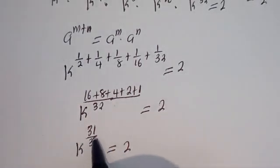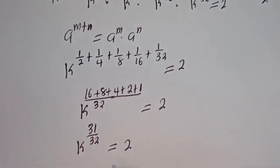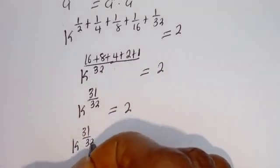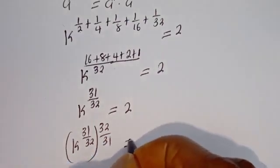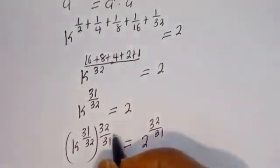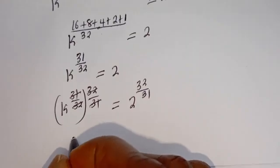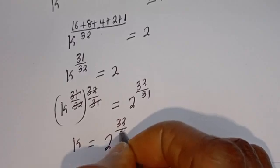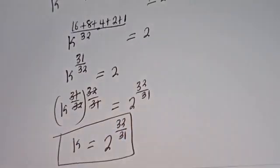Now let's multiply the exponent of both sides by 32 over 31, because we are looking for the value of k. This gives k to the power of 32 over 31 times 31 over 31 — the 31 over 32 and 32 over 31 cancel — then k equals 2 to the power of 32 over 31. And this is the final answer from the first method.